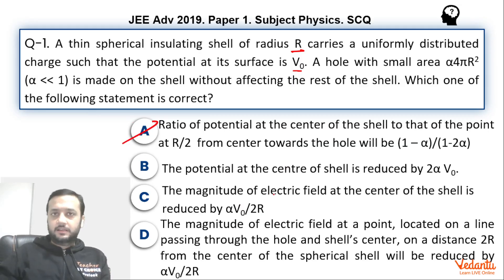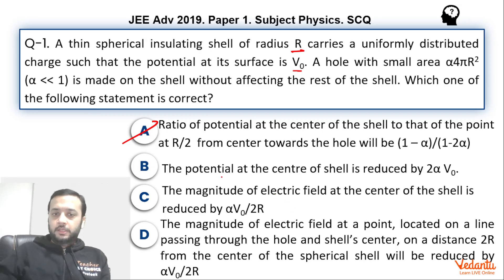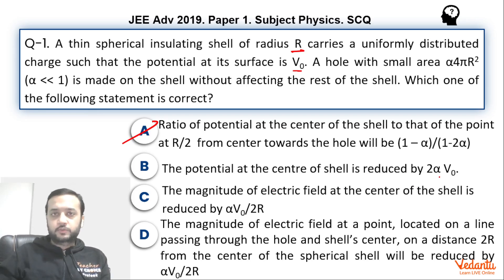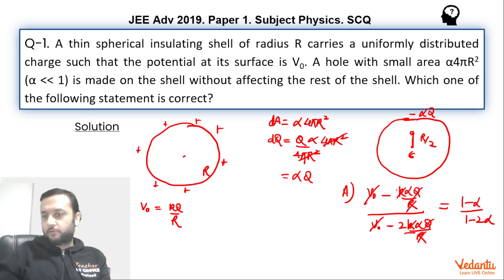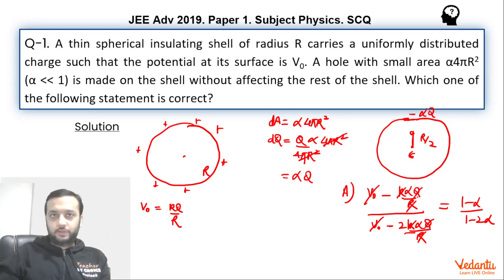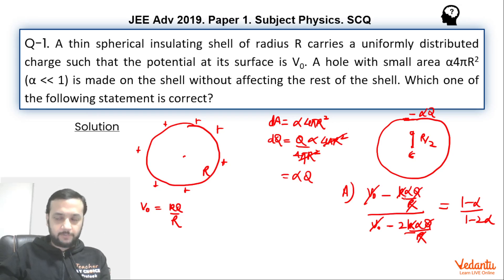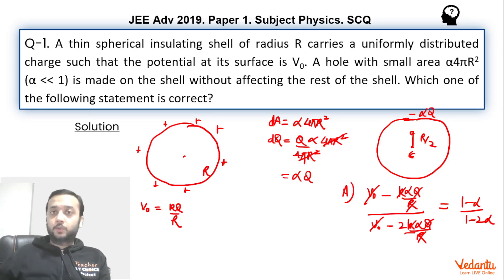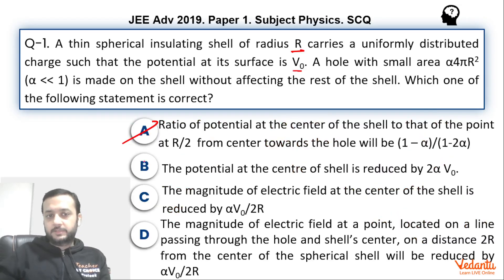Option B states that the potential at the center of the shell is reduced by 2αV₀. We have already checked that the potential at the center reduces by αV₀ — you can see this from our calculation. So the reduction is αV₀, not 2αV₀, and hence Option B is wrong.